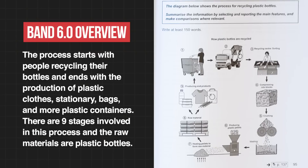Let's read the student's overview: 'The process starts with people recycling their bottles and ends with the production of plastic clothes, stationery, bags, and more plastic containers. There are nine stages involved in the process. And the raw materials are plastic bottles.' To an amateur, if they looked at that overview, they would think that's pretty good. But is it?